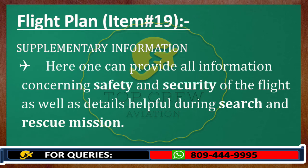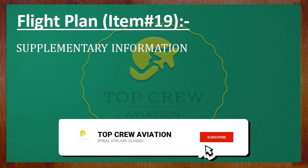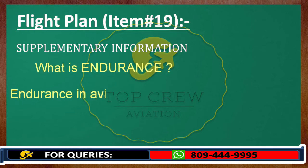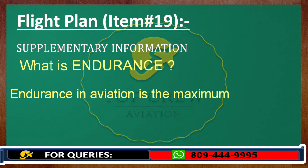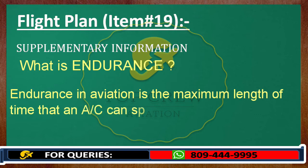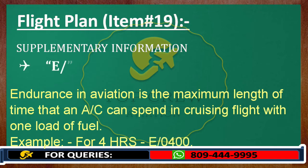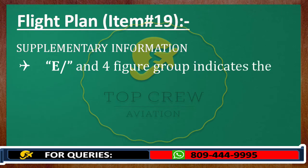In item number 19 we insert endurance. Endurance in aviation is the maximum length of time that an aircraft can spend in cruising flight with one load of fuel. For example, if we can survive for four hours in the air, we write 0400. If four hours and thirty minutes, we insert 0430 under endurance in item number 19. It's very easy.